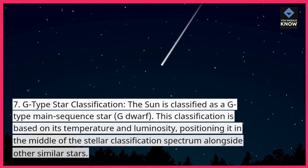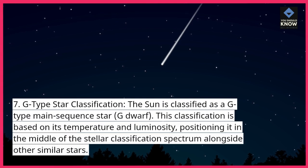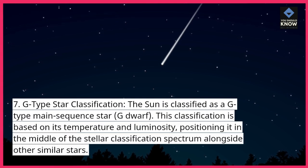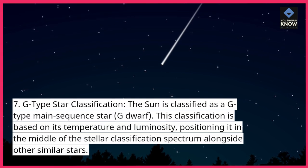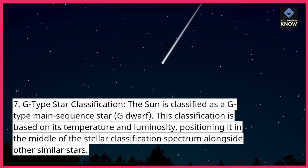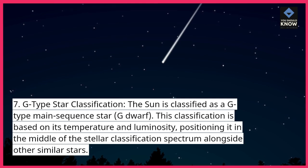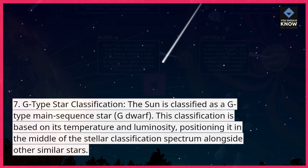G-type star classification: the sun is classified as a G-type main sequence star, or G-dwarf. This classification is based on its temperature and luminosity, positioning it in the middle of the stellar classification spectrum alongside other similar stars.